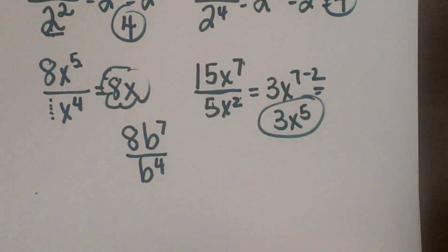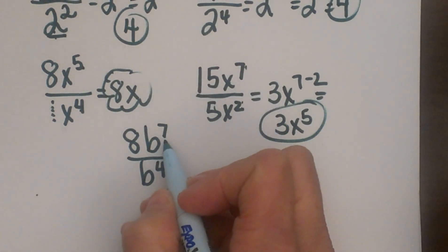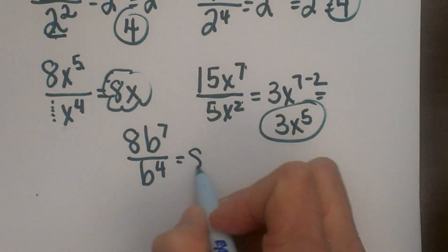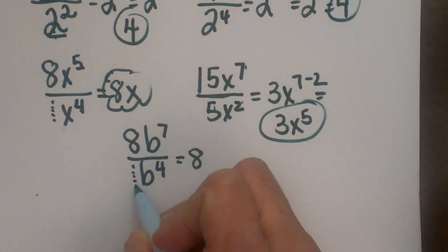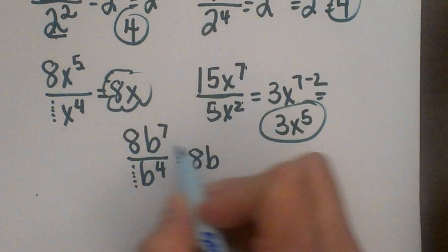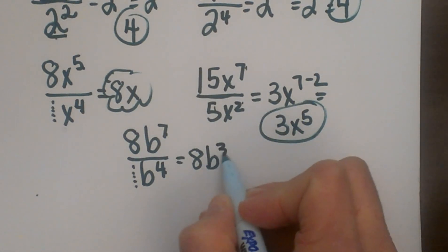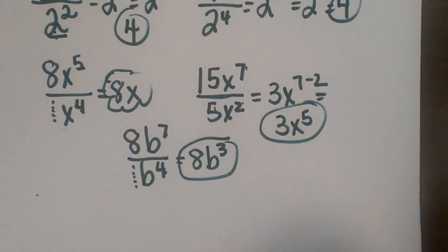Let's look at one more. We have 8b to the 7th divided by b to the 4th. The 8 stays 8 because we're dividing by 1, and then b to the 7 minus 4 is 3. So it's 8b cubed.